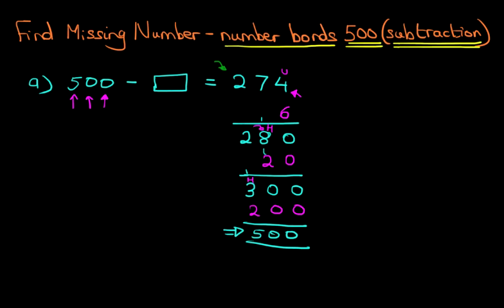So what number did we add to the 274 to make it equal to 500? Well, there is a 6 over here, 20 over here, and the 200. We don't need to add these. We just collate them. We've got 200s, 2 tens, and 6 units. So the answer is 226.